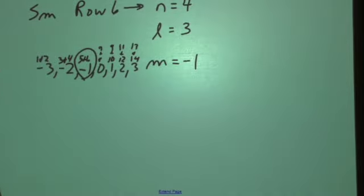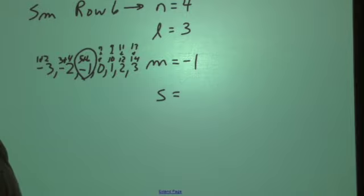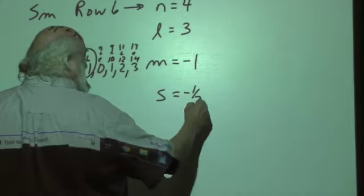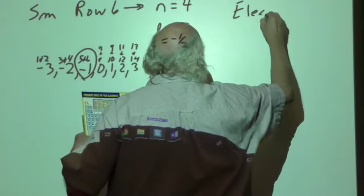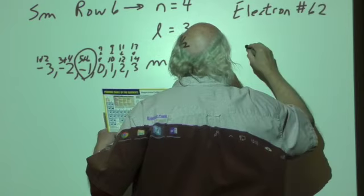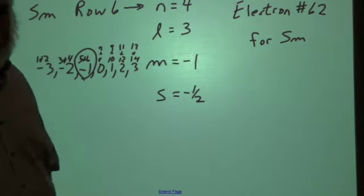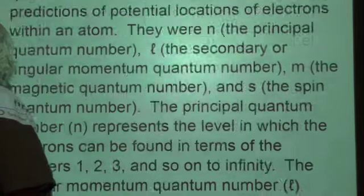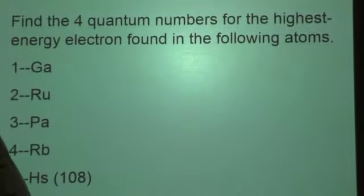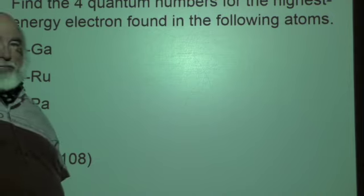And so that makes that negative one. And since five is the first of the two electrons to go into that path, the value for that again is negative one-half. So this would be the positive. So this is electron number sixty-two for samarium. And that's how you find the quantum numbers. All right? So your assignment is to find the quantum numbers for the following elements: gallium, ruthenium, protactinium, rubidium, and berkelium. Have fun. Thank you.